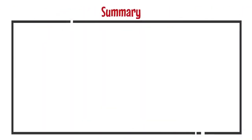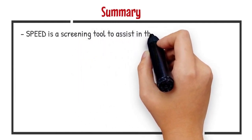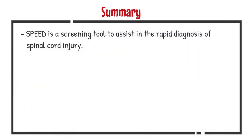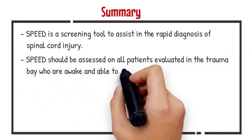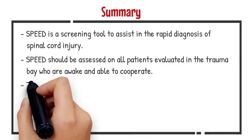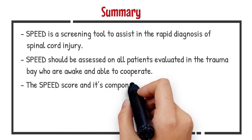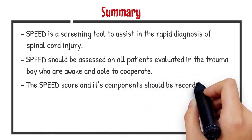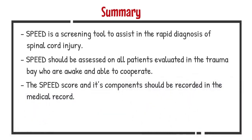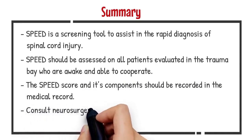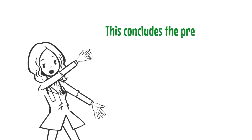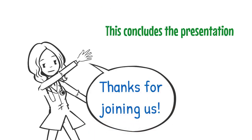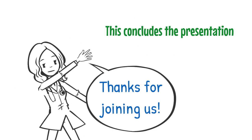To sum up, SPEED is a screening tool to assist in the rapid diagnosis of spinal cord injury. It should be done on all awake and cooperative trauma patients during the secondary survey. Results should be recorded in the medical record and are also used to determine next steps in the plan of care for the patient. If a score of 0 to 1 is observed in any of the exam sections, Neurosurgery should be contacted. This concludes the presentation. Thanks for joining us.